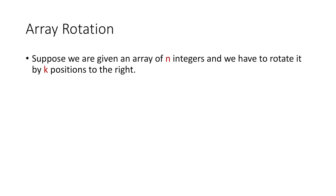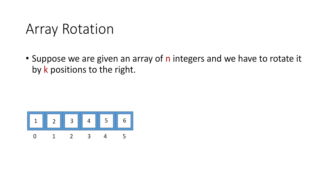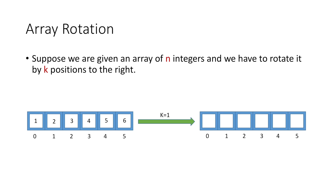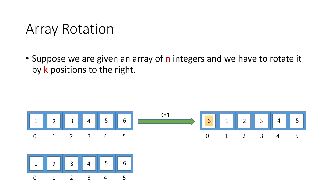If we have this array of 6 integers and the value of k is 1, we have to move every element one position to its right. The element at index 0, which is 1, will now be at index 1; similarly 2 at index 2, then 3, then 4 at index 4, and 5 at index 5. Since we reach the end of the array with one element remaining, we place it at index 0, moving in a cyclic fashion.